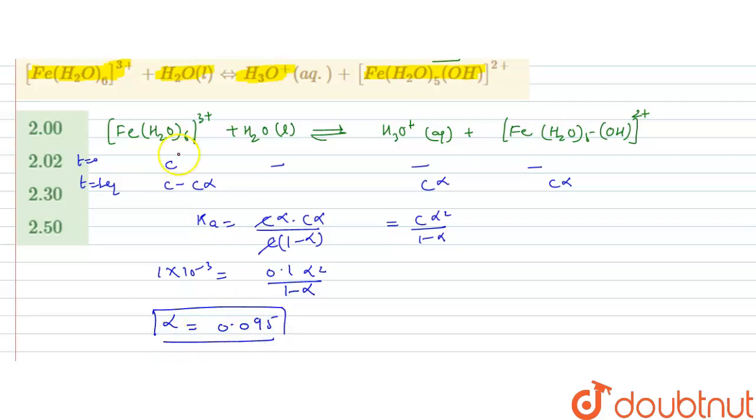If the degree of dissociation, that is alpha, if it is less than 0.02, then it is neglected as compared to 1, but it is 0.095. So, we cannot neglect this, it means alpha is this.